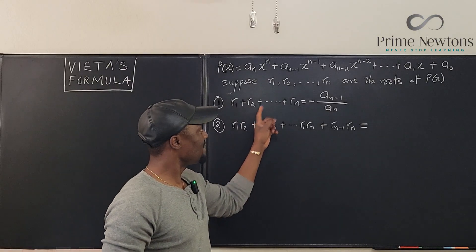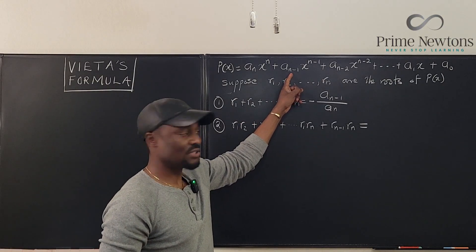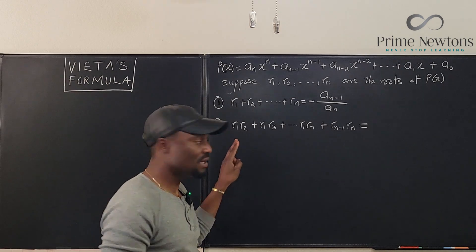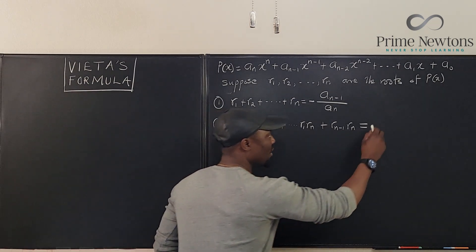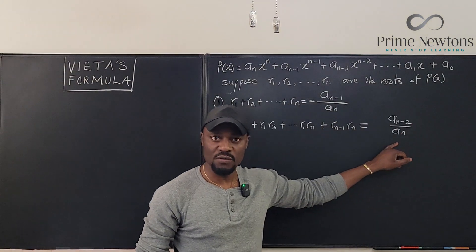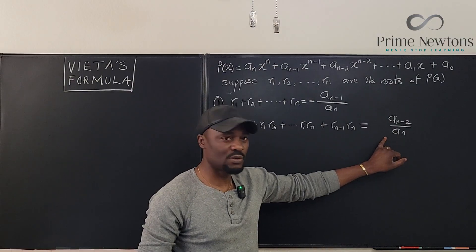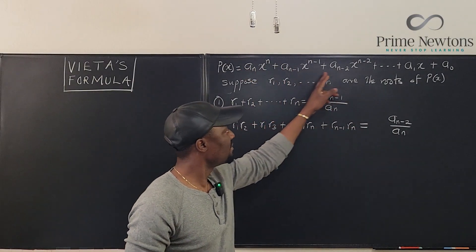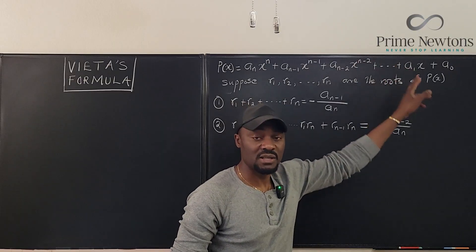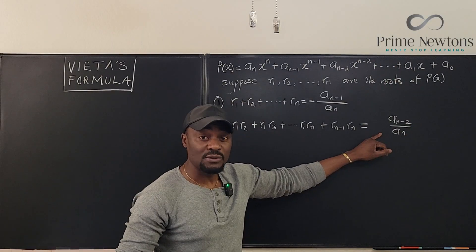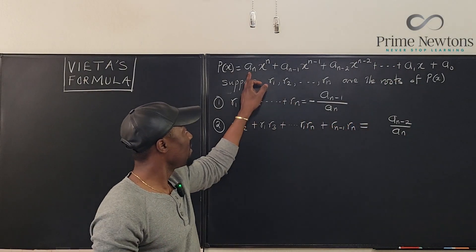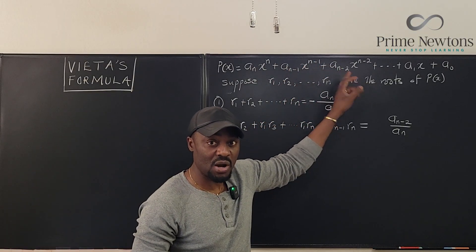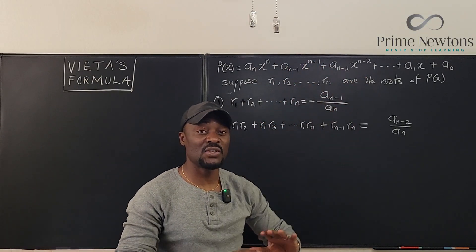If you keep pairing them and you multiply them and you add up all those pairs, the sum is going to be the third coefficient divided by the first coefficient. You see, when we did this, it was just the second coefficient. Now that we have the pairs multiplied together, it's pairs of twos. You're going to have this n minus 2 over a sub n. Don't forget this sign. This one negative, negative, positive. You keep going like that. All you have to do is take note that the first is positive. The second is negative. The next one is going to be positive, negative. They keep alternating until you get to the end.